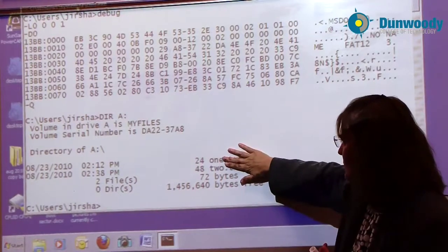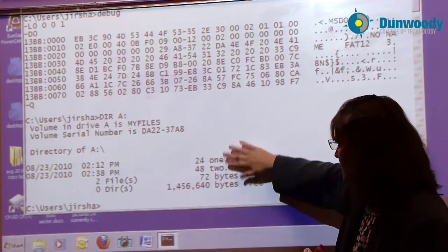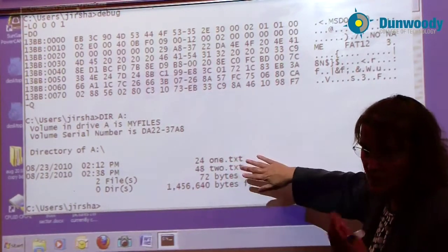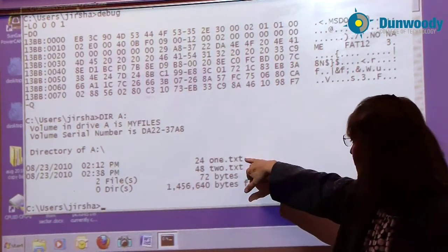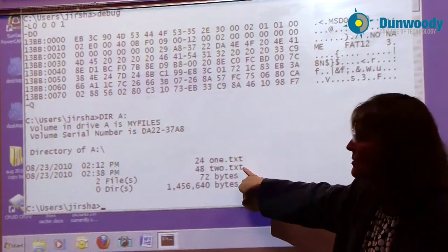I'm going to look at the directory table that's holding this information. I can see that I have three entries in the directory table: one for the volume label, one for the file name 1.txt, and one for the file name 2.txt.